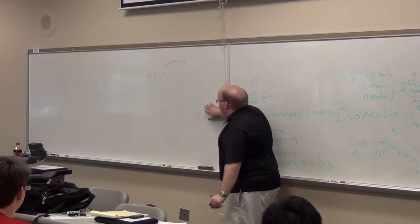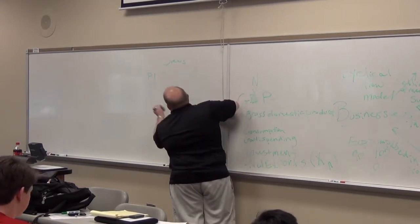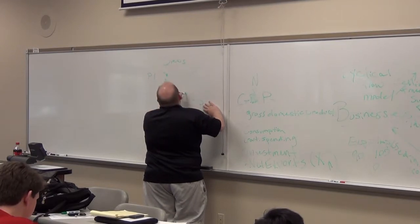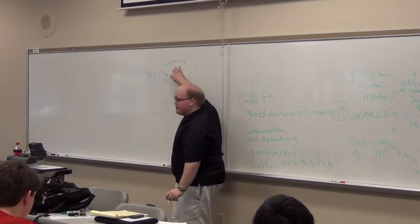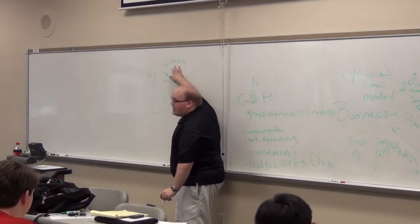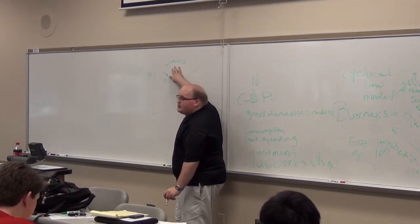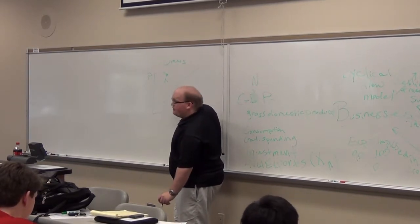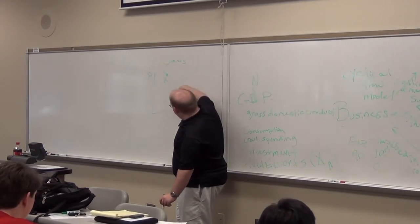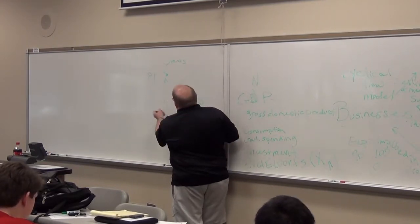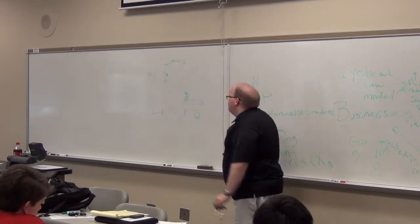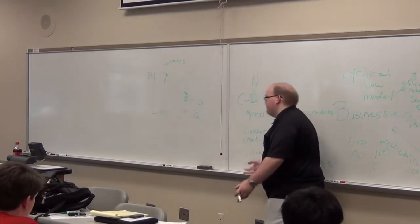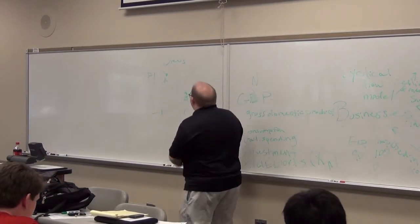This is the demand curve. As the price goes up, you can't afford to buy as much. At a high price point, the product is expensive and you'll buy few. At a lower price, you'll buy a lot more. So as the price goes up, you're going to have to make some trade-offs.